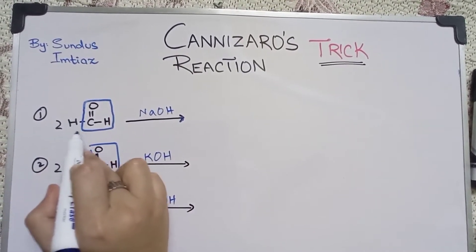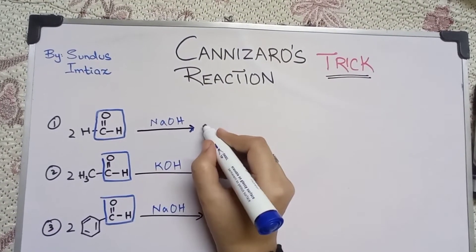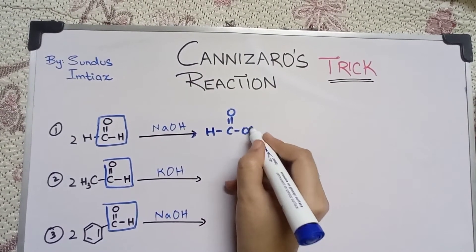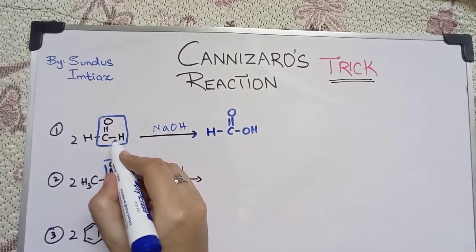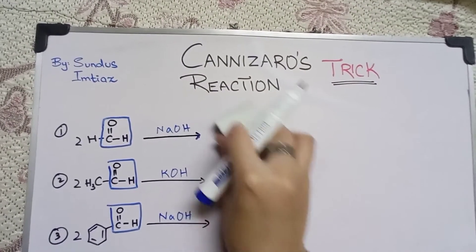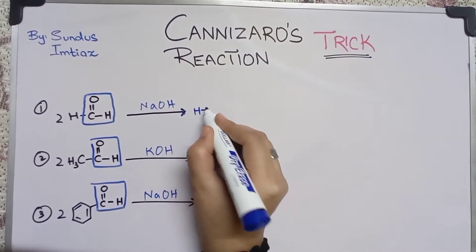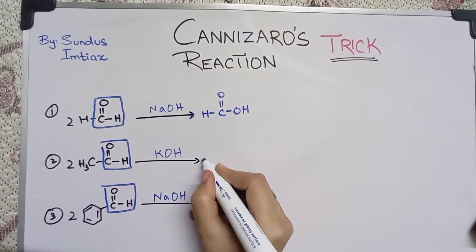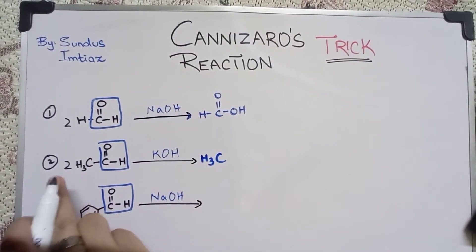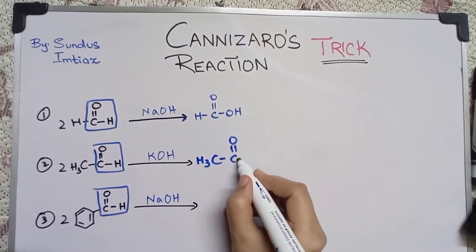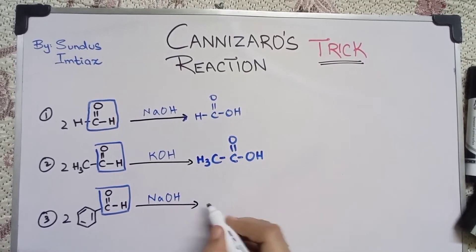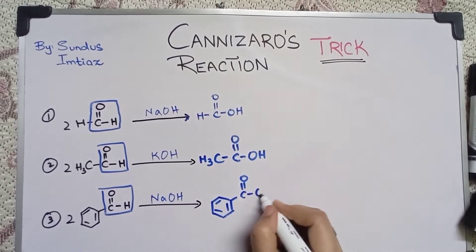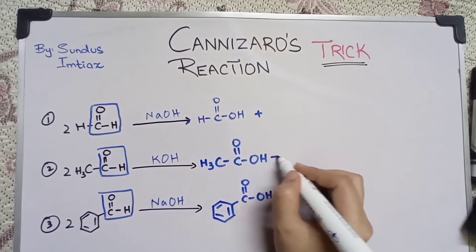Do not change the groups that are after the carbonyl — write H as it is, do not change it — and convert this aldehyde group into a carboxylic group. Again, do not change the methyl group, write it as it is, and change the aldehyde group into a carboxylic group. Then make the benzene ring and convert this aldehyde into an acid.